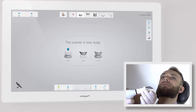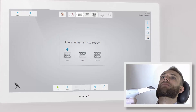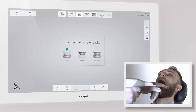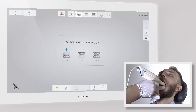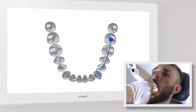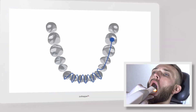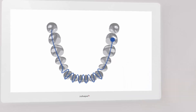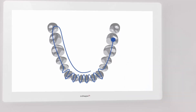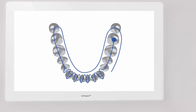Place a clean scan tip on the scanner with the mirror facing down for lower arch scanning. Use your finger or a dental mirror to create space between the teeth, lips and cheeks. The recommended scanning path consists of three sweeps: occlusal, lingual, and buccal, to ensure good data coverage of all surfaces.